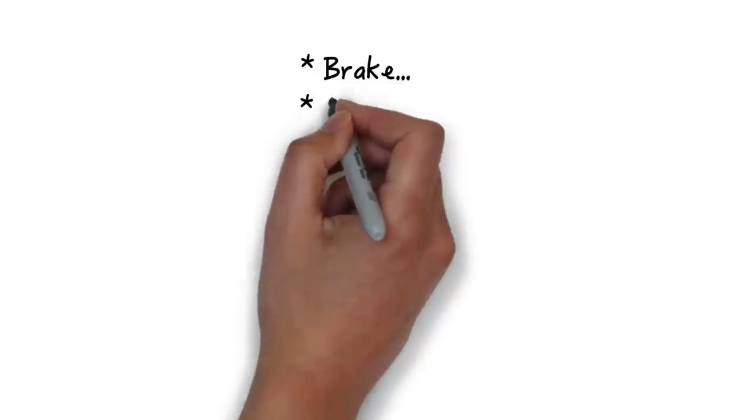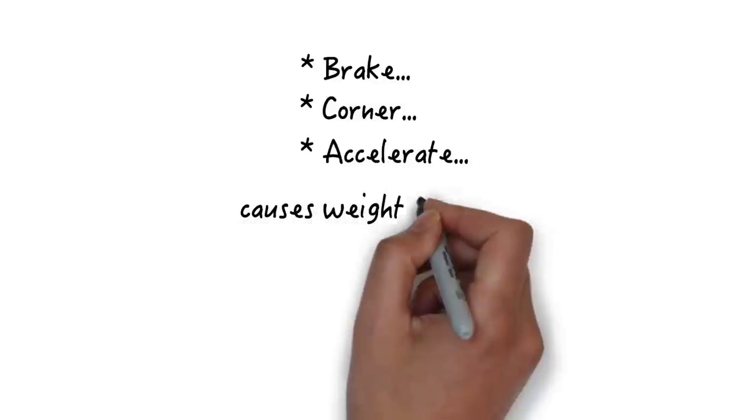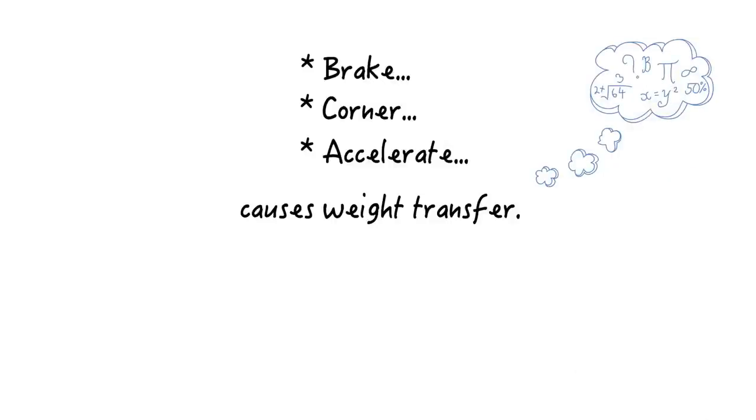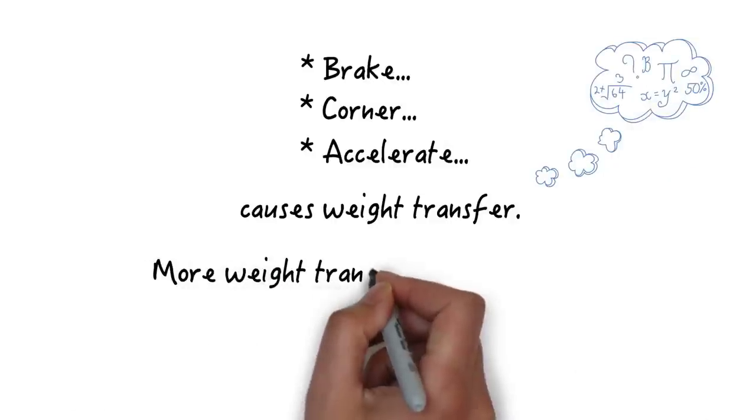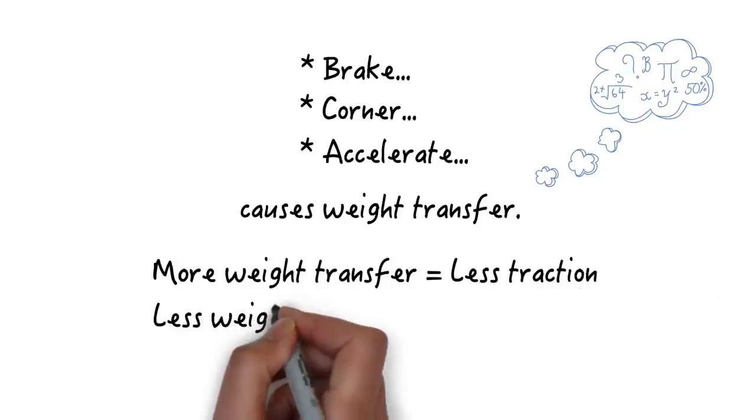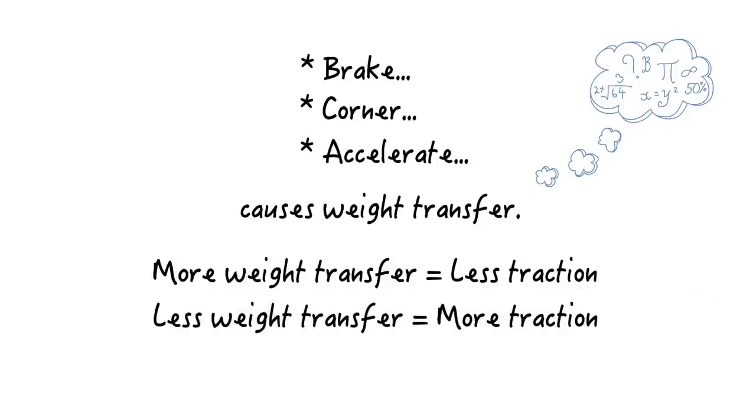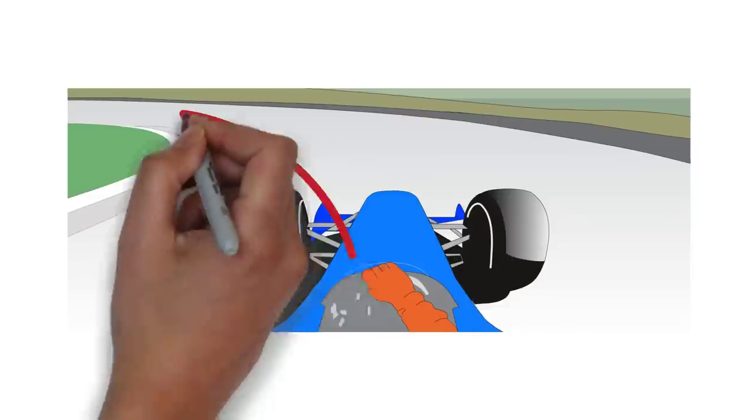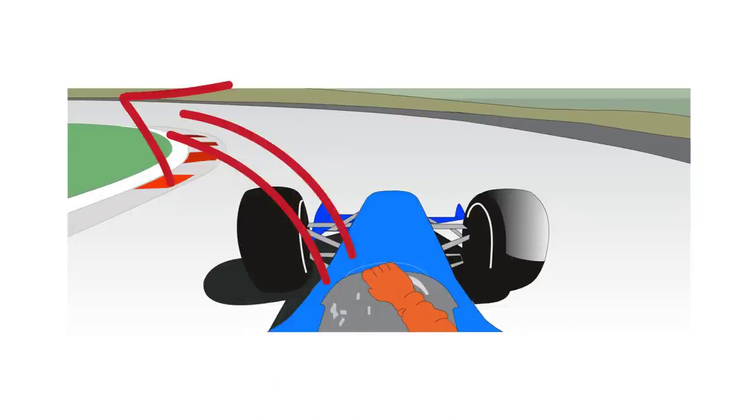Of course, every time you brake, corner or accelerate, you cause weight transfer, and your car has less traction because of that. That's the laws of physics in play. If you brake, steer and accelerate smoothly though, you'll cause less weight transfer and therefore have more traction, perhaps more than the 36 in our example here. But if you're not smooth with the controls and you're not looking far enough ahead, you'll upset the balance of the car even more and perhaps end up with even less than the 36 units of traction holding you on the track.